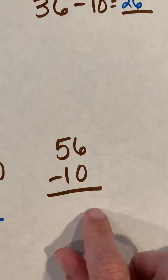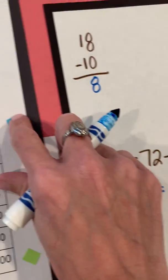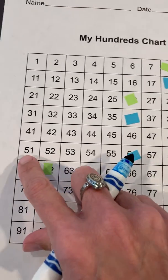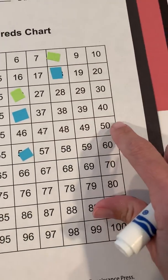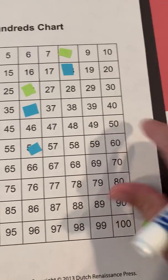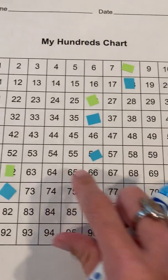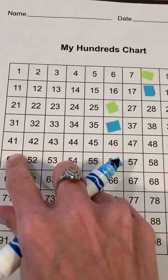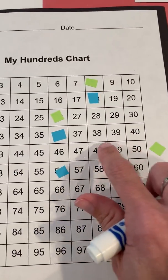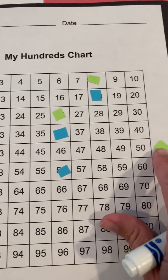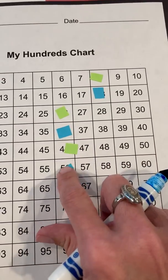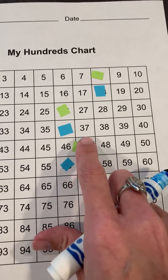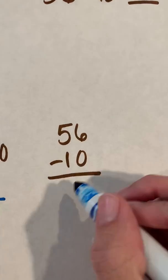And then we have 56 minus 10 is our last one. So we're going to find 56. I'm going to go ahead and think, I know I'm going to have to go past this 51. And remember, what's right before 51? 50. So let's keep that in mind as we're counting back. So one, two, three, four, five, six, seven, eight, nine, 10. So I ended up on 46. Once again, look at the ones place. Look at the tens place. So our difference, 56 minus 10 is 46.